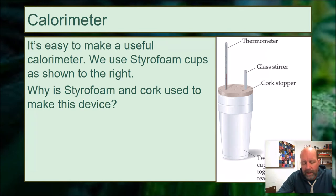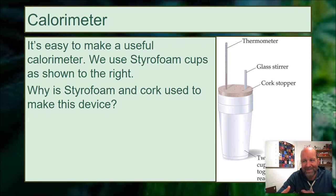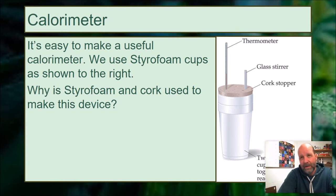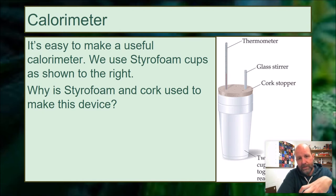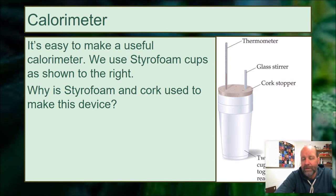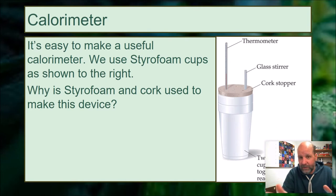We'll use a calorimeter in a lab — a couple of styrofoam cups, using another styrofoam cup upside down instead of a cork stopper. We use styrofoam because it doesn't absorb heat very well; it has a very low specific heat. Specific heat is the amount of energy it takes to raise a particular mass — usually per gram or per kilogram — one kelvin or one degree Celsius. Styrofoam and cork both have a very low specific heat.